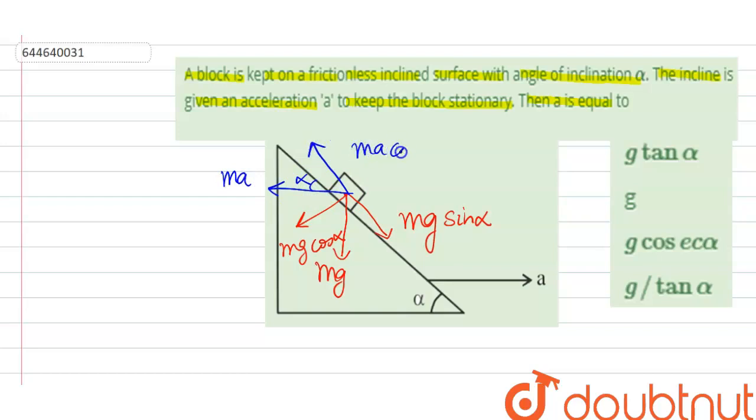And this side, it is ma sin alpha. Now the block is stationary, that means that the net force acting on the body will be 0.